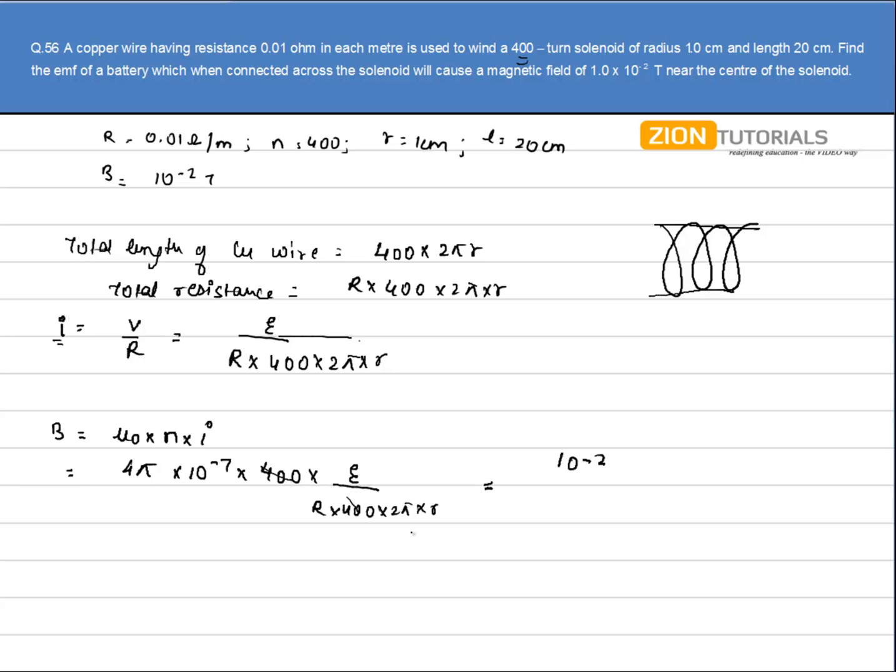So 400 is cancelled from both sides. Substituting all the values I get the value of EMF as 1 volt. That is the answer.